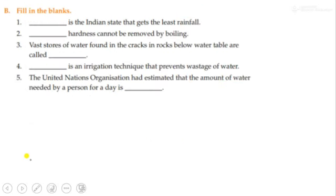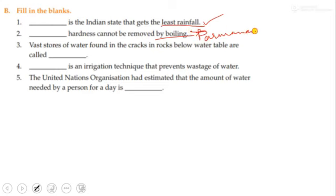In the filling the blanks section, the Indian state that gets least rainfall — you will find it in your textbook where the Indian map is shown. Hardness of water: permanent hardness of water cannot be removed by boiling. Vast stores of water found in cracks below the water table are known as aquifers. The irrigation techniques that prevent water wastage — do that by yourself.